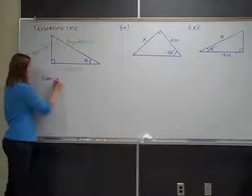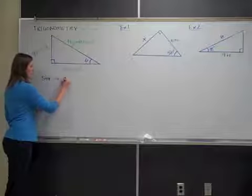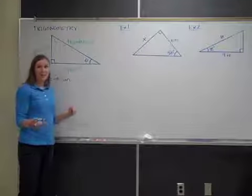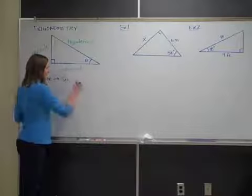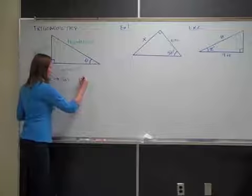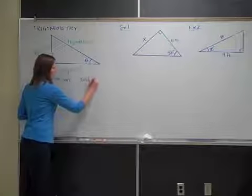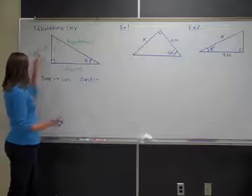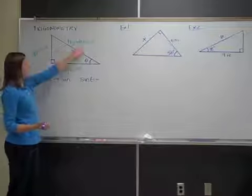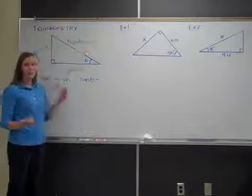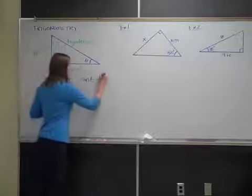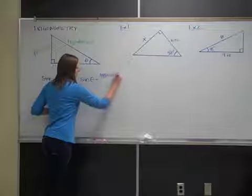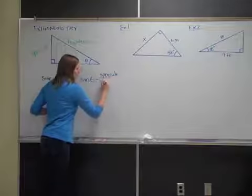Sine is abbreviated SIN, and you've probably seen the button on your calculator. The definition of sine is: the sine of theta equals the ratio of the opposite side to the hypotenuse. So you put those two side lengths in a fraction with the opposite on top and the hypotenuse on the bottom.